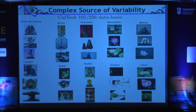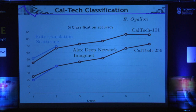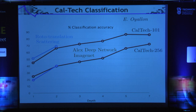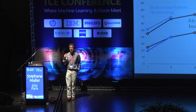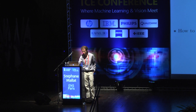For complex variability like Caltech images with different classes: the deep network results show the classification rate improving from first through seventh layer — this is the network used for ImageNet, achieving about 90% accuracy on Caltech 101. With the scattering transform using physical invariants of rotation and translation, you do as well as a deep network over two layers, but you don't go beyond — because beyond that you need to learn the source of variability. The message is: the first layers deal with physical invariants, and the next layers begin to learn the invariants.